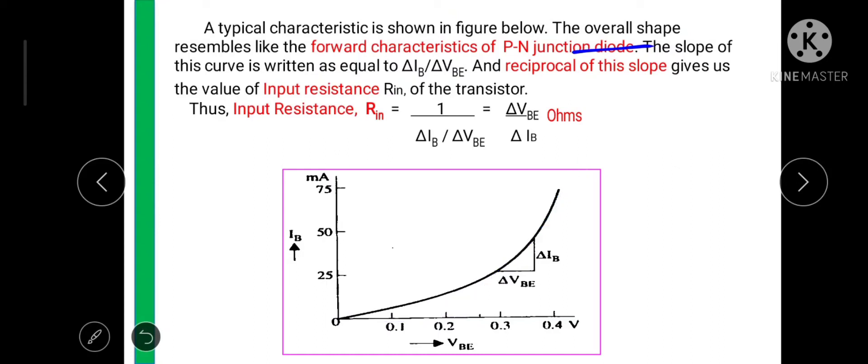The slope of this curve is written as equal to change in output upon change in input or change in Y axis upon change in X axis. So on Y axis we have taken the current and on X axis we have taken the voltage. Therefore the slope of this curve it is taken as delta IB upon delta VBE that means change in base current upon change in base to emitter voltage.